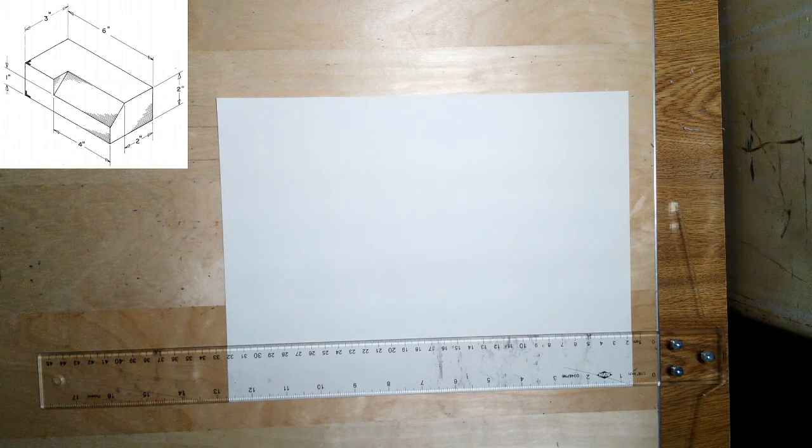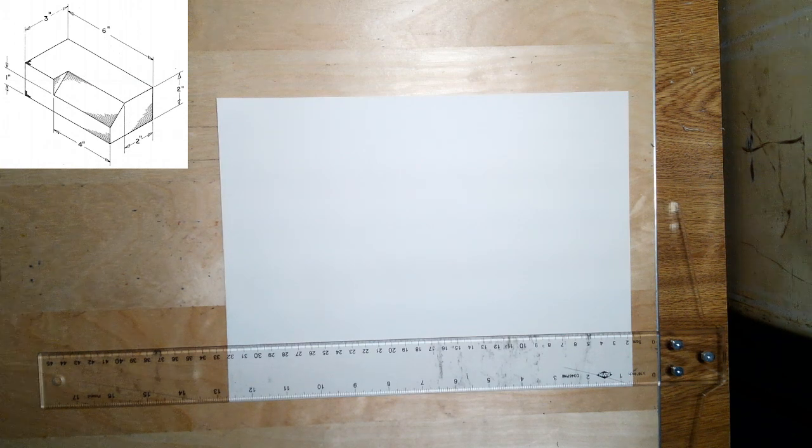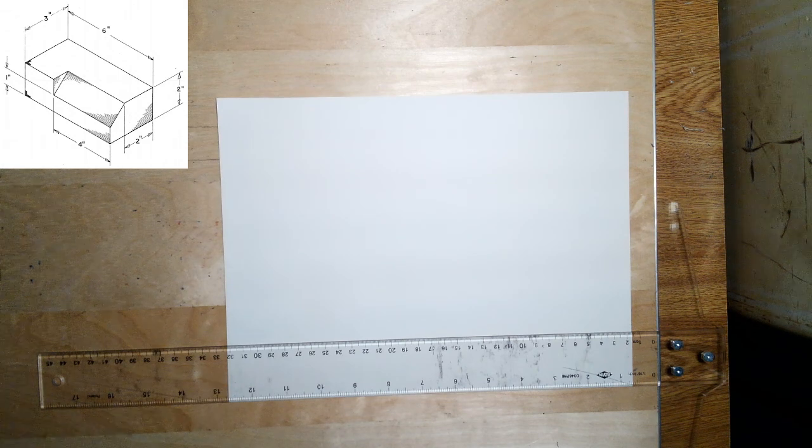Okay, we're getting into some different shapes now. So now we have a shape that has a little bit of an angle to it.